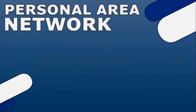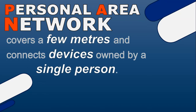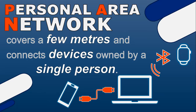Starting with the smallest network: a Personal Area Network, or PAN for short. It covers just a few meters and connects devices owned by a single person, like your smartphone, laptop, and wearables like a smartwatch. That's why it's called a personal area network — it's all your own personal devices connected together. Devices tend to be connected via USB cables or Bluetooth.